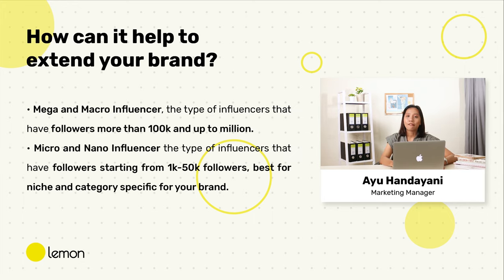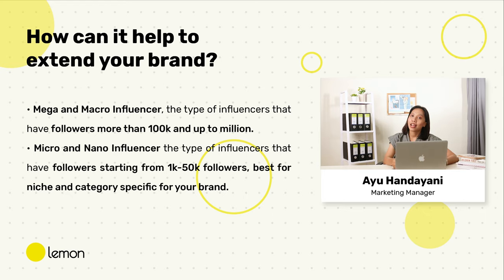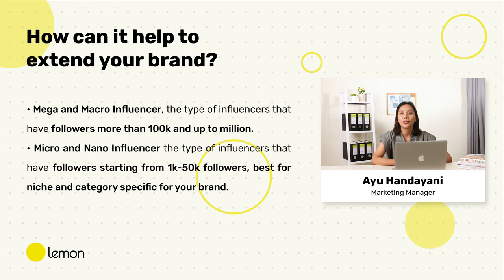How can it extend your brand? First, let's talk about Mega and Macro Influencers. This type of influencer has more than 100,000 followers, up to billions of followers. When you decide to use Mega and Macro Influencers, we will create a shortlist in our app based on our data analytics in Lemon, and you will have a dedicated client success manager who will create a brief for your influencer based on your requirements. Now, let's move on to Micro and Nano Influencers. Nano and Micro Influencers have 1,000 to 50,000 followers and are good for brands that are niche and category specific. When you decide to use Nano and Micro Influencers, we will create a shortlist and select the best influencers to join your campaign.